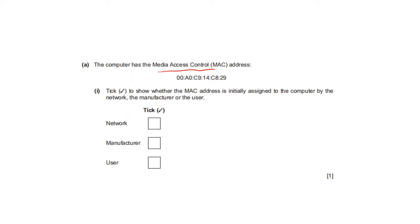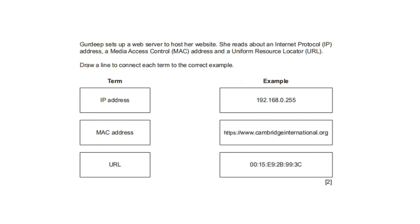The computer has a MAC address. Tick to show whether the MAC address is initially assigned to the computer by the network, the manufacturer, or the user — MAC address is assigned by the manufacturer. Gurdeep sets up a web server and reads about IP addresses, MAC addresses, and URLs. Draw a line to connect each term to the correct example: this is the IP address example, this is the MAC address example, and this is the URL example.